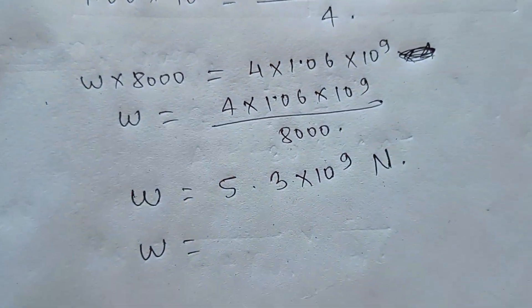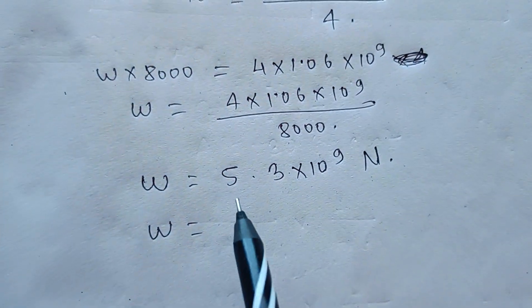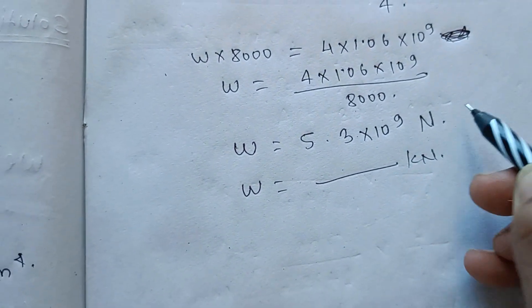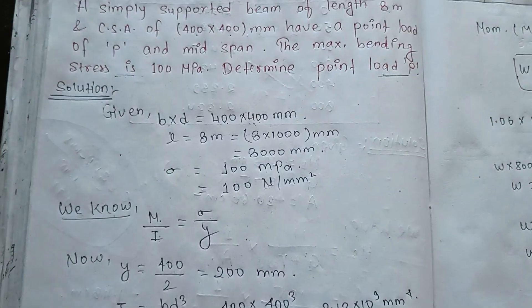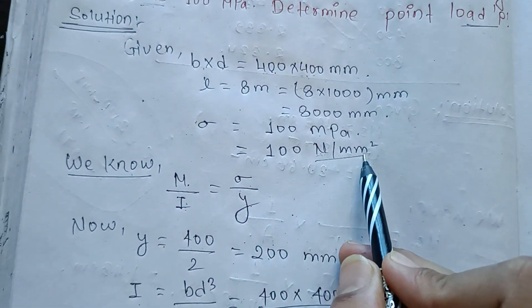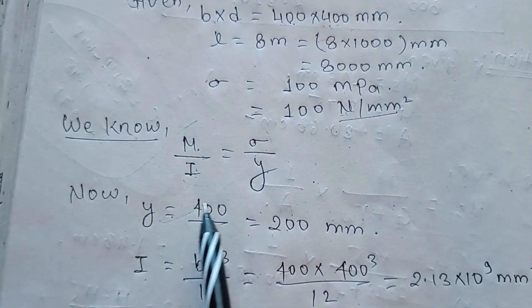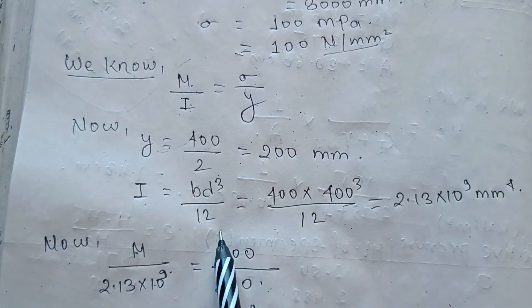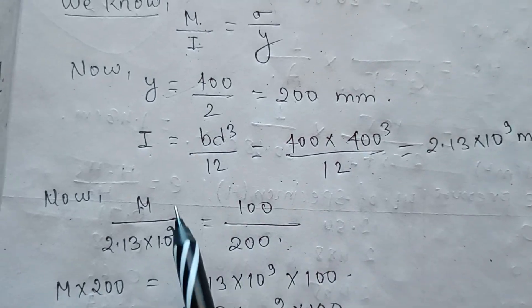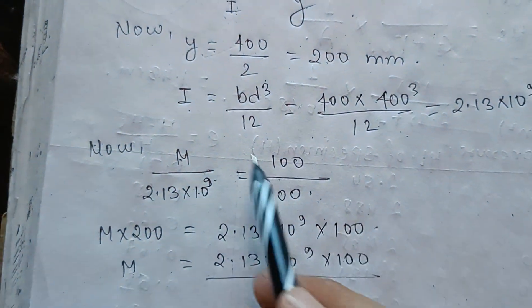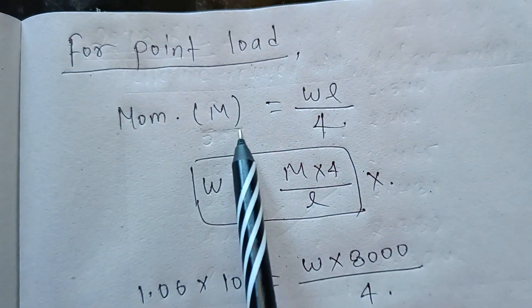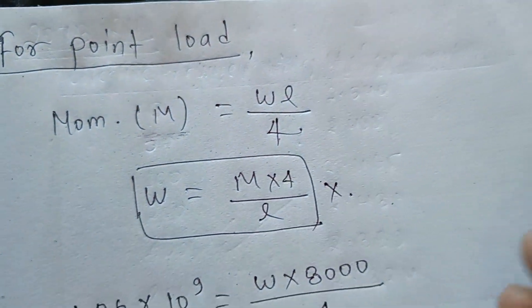The result is in kNm. Given the sigma value in MPa, using the flexural formula, I equals bd cubed by 12. The value of M equals sigma into I by y, and then W equals M into 4 upon L, giving the final value of the point load W.